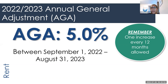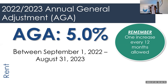Rent increases can only be applied once every 12-month period. So if your landlord is going to give you this upcoming rent increase starting September 1st, they'll give you the 5% starting September 1st, and then they're going to have to wait a whole 12-month period until they can give you the next rent increase. If you're receiving more than one rent increase in a year or in a 12-month period, you definitely want to come and talk to us so we can take a deeper look into what's going on.